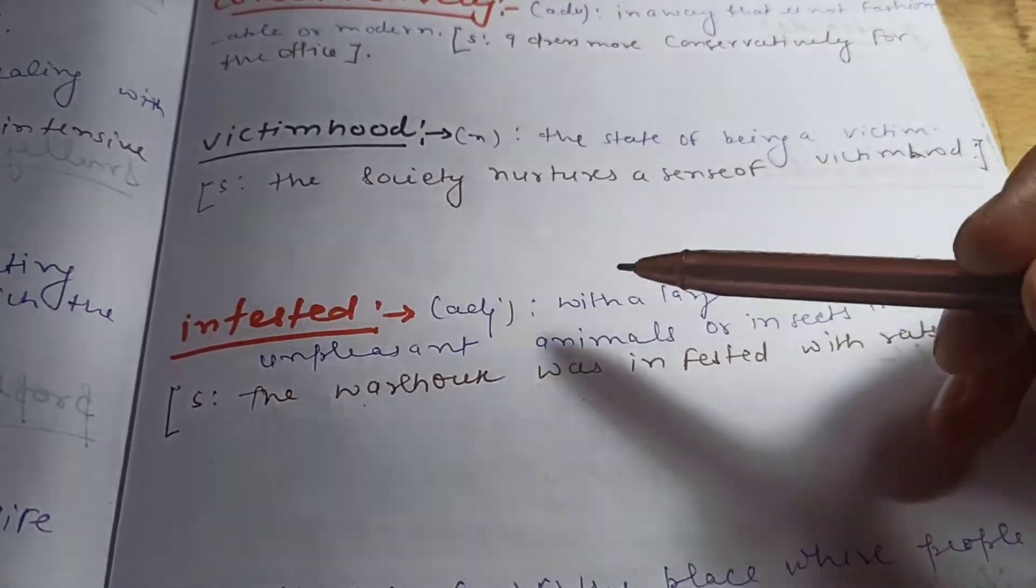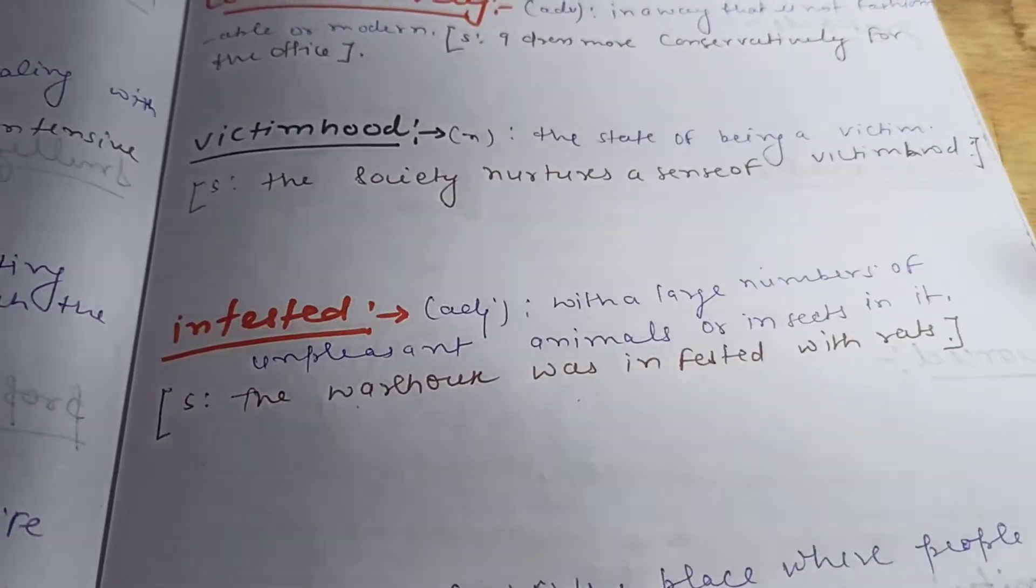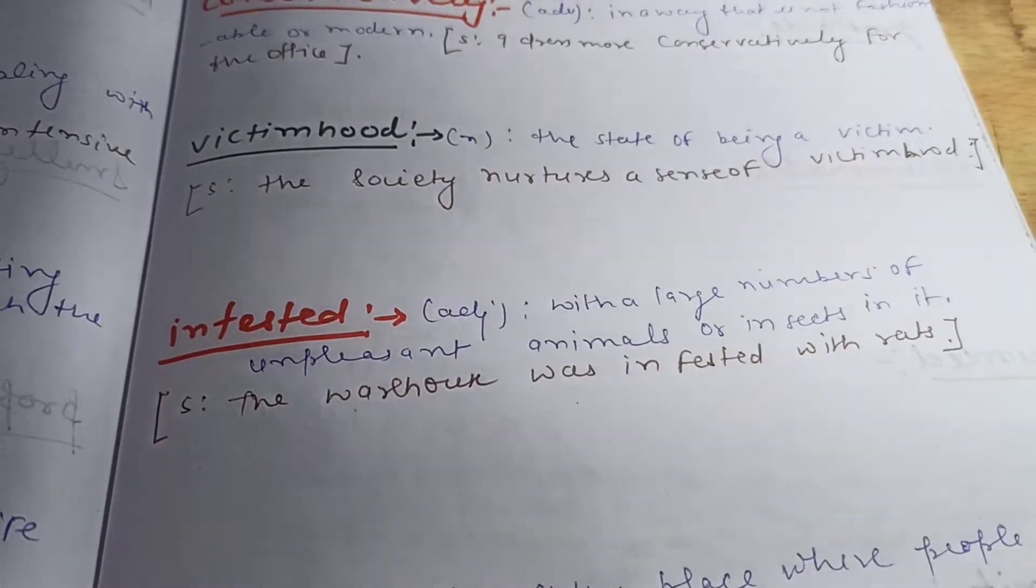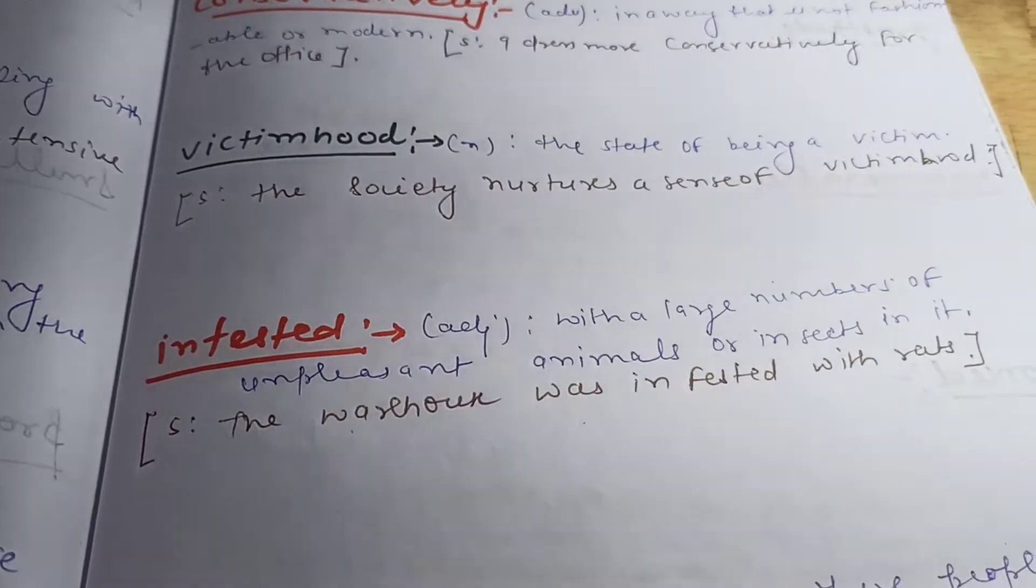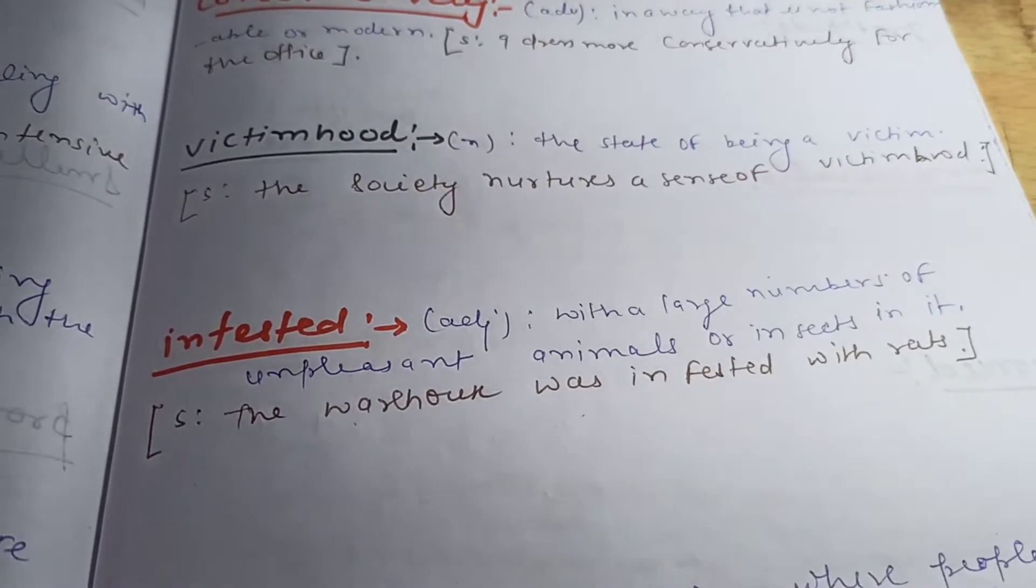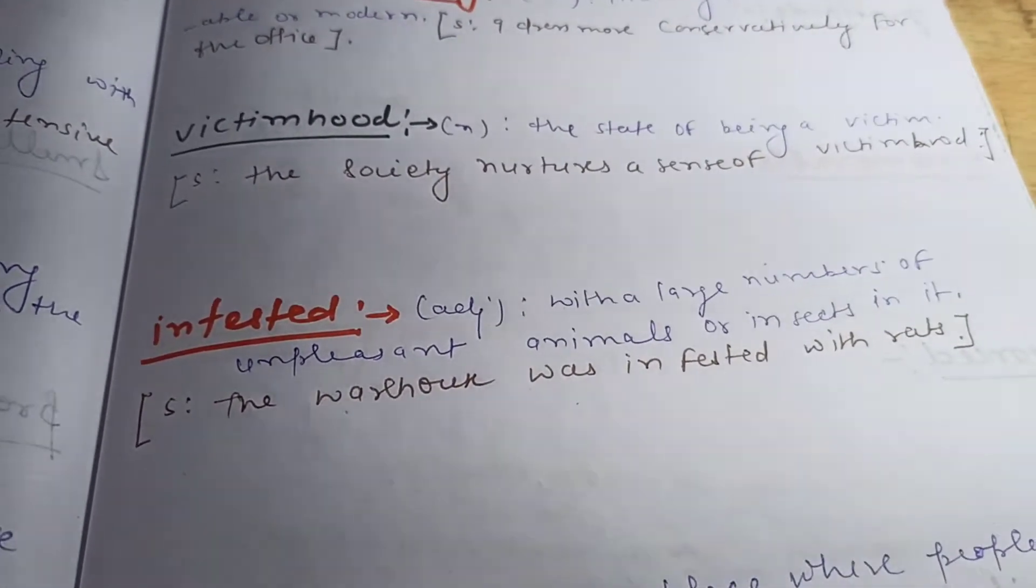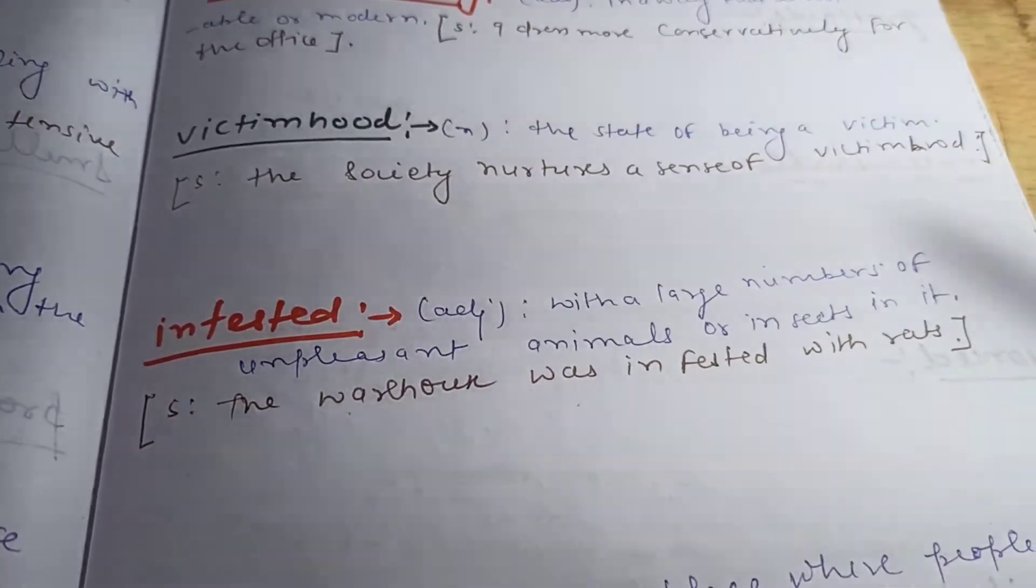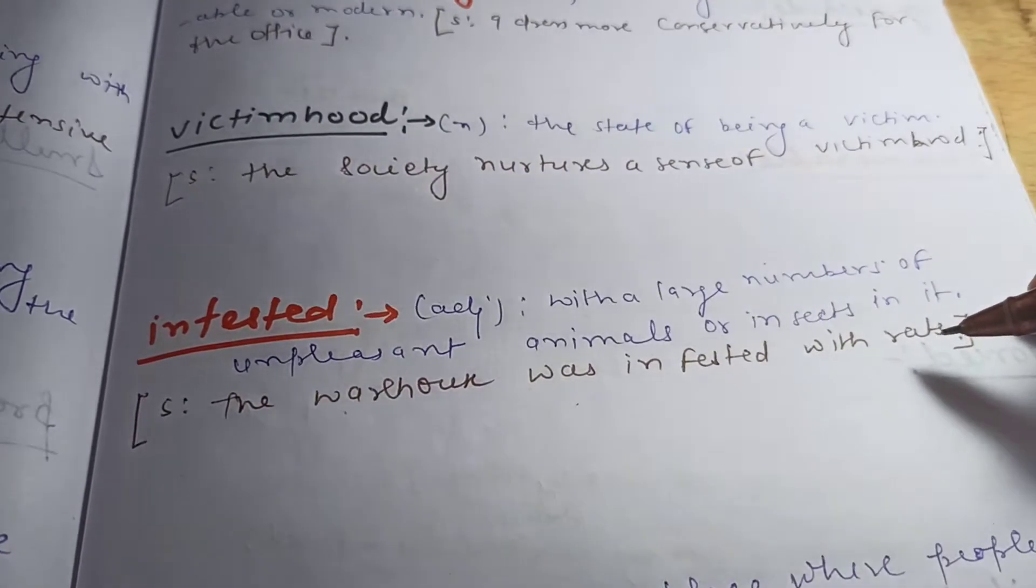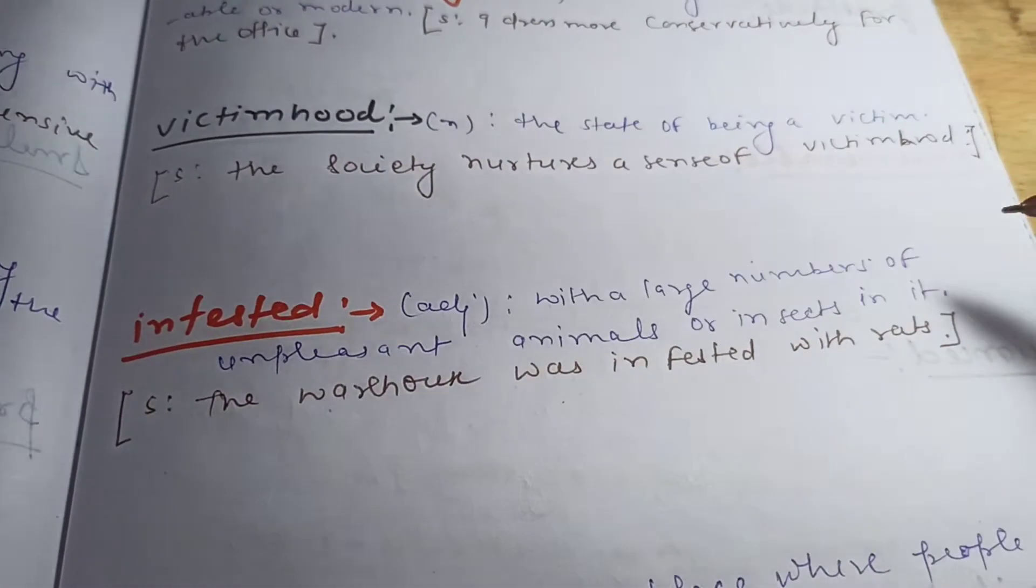And infested - infested is an adjective, and the meaning of this word is with a large number of unpleasant animals or insects in it. So in some places with unpleasant animals like rats, we use this word. Sentence of this word is: the warehouse was infested with rats.